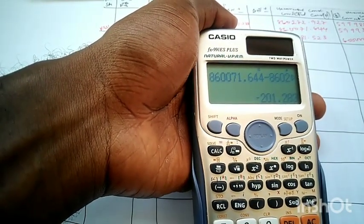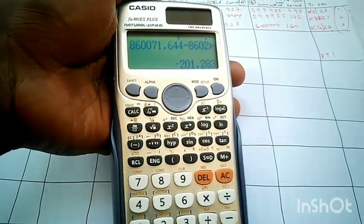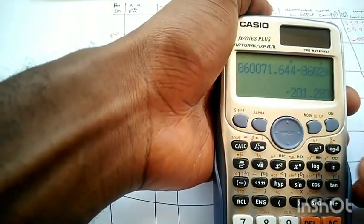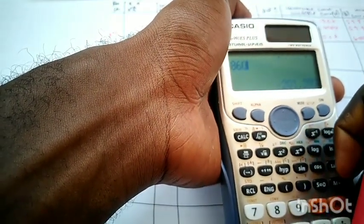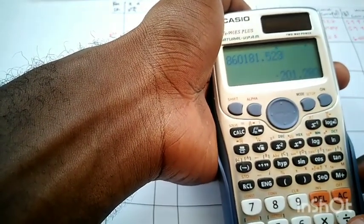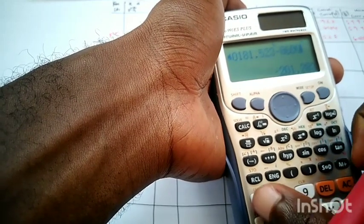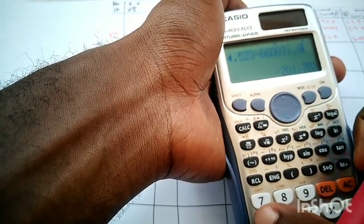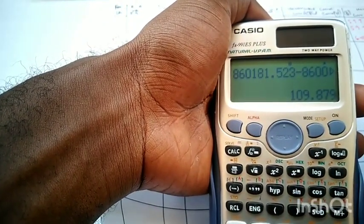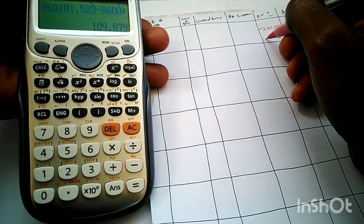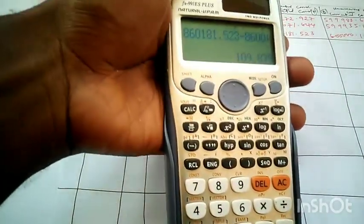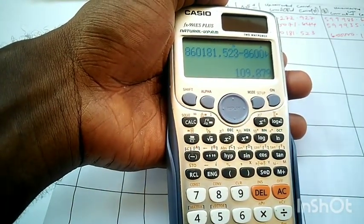The next thing we are going to do is 3 minus 2 for the northern value. We have 860181.523 minus 860071.644. So what do we have? We have 109.879. You can see that it's very easy.